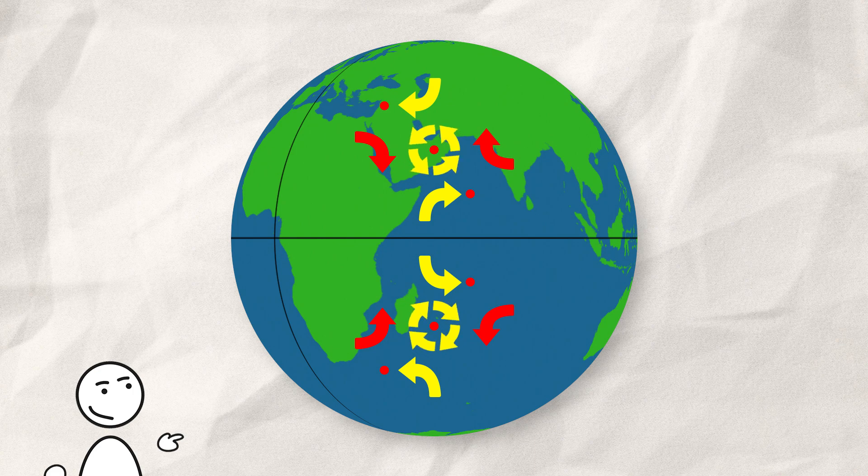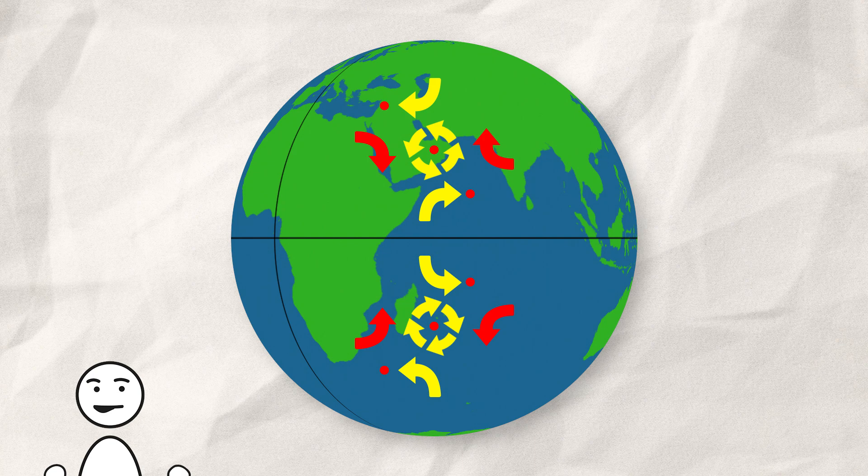But what about those arrows? I didn't explain them at all. Well, you are right. I just wanted to get the basic north-south direction out of the way. Let's start with the east-west and the centripetal acceleration. But one step at a time.